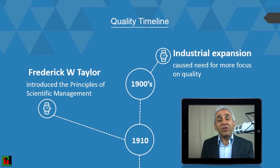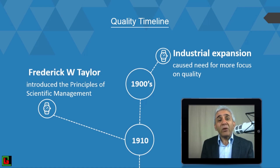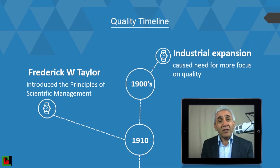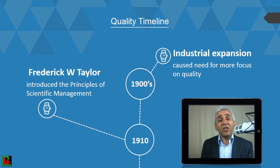Going back to the 19th century, that was the time when quality was craftsmanship. The craftsman would take pride in his or her work, perfect his or her art, and teach that work to the next generation. That's how craftsmanship worked, because there was a reputation attached to the work.